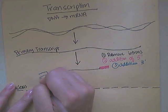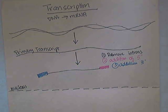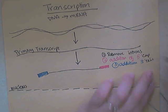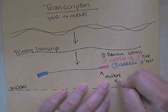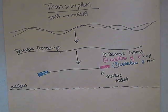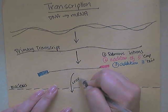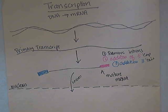Then the third thing that's going to happen is the addition of a cap or a tail on the three prime end. Both of these act as a way to protect the mRNA. And when you've removed the introns and you've added both your cap and your tail, this right here is called your mature mRNA. This mature mRNA is then allowed to leave the nucleus so that it can be used to actually make the protein itself, which is called translation. And we're going to do that process down here.